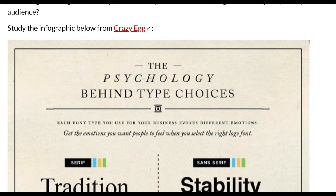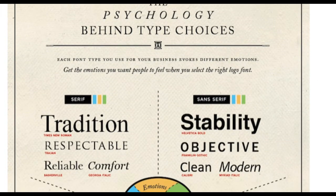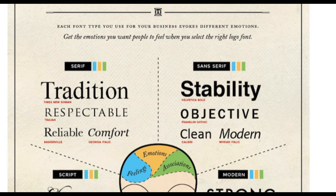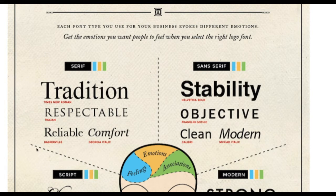The psychology behind type choices: each font type you use for your business evokes different emotions. Get the emotions you want people to feel by selecting the right font. For serif, the associated qualities are tradition, respectability, reliability, and comfort. Fonts listed include Times New Roman, Trajan, and Baskerville. For Game of Thrones fans, you might recognize Trajan — that's the Game of Thrones font, and it's been one of my favorites for a long time.